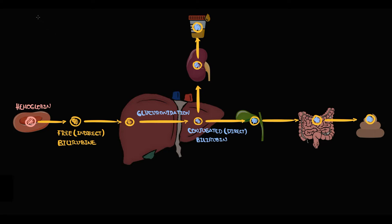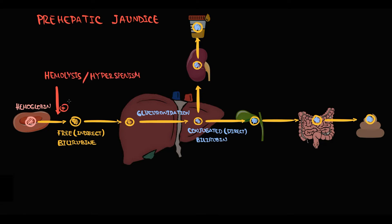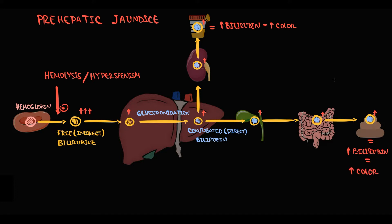The first cause of prehepatic jaundice is hemolysis or hypersplenism, which cause destruction of red blood cells. The higher the red blood cell destruction, the more free bilirubin will be formed. Part of free bilirubin is taken up by the liver and converted into conjugated bilirubin, causing increased conjugated bilirubin in the urine — giving urine a dark color — and increased excretion of bilirubin into the feces, giving feces a dark color. So in hemolysis, the causative factor is a massive increase in production of indirect bilirubin, and the concentration of indirect bilirubin is higher than direct bilirubin.